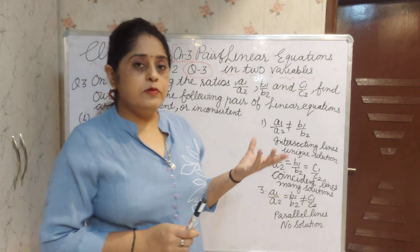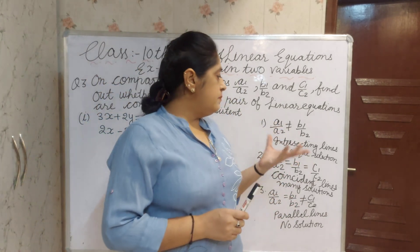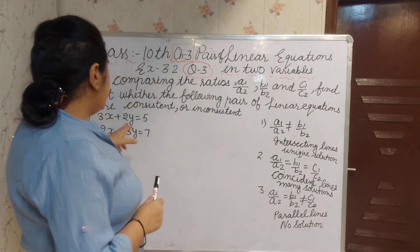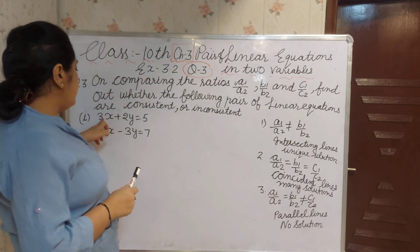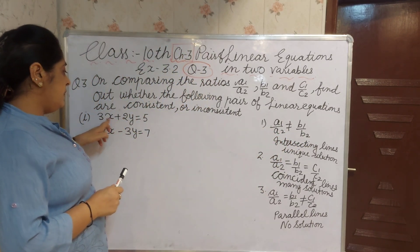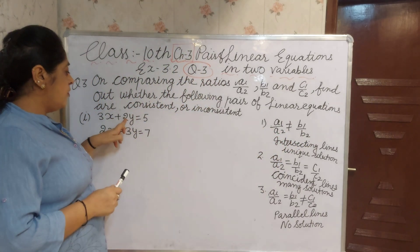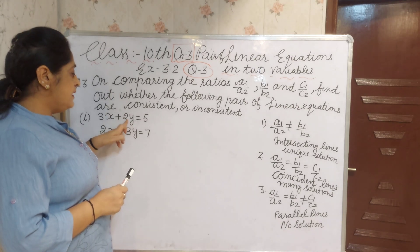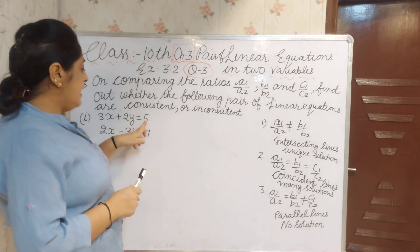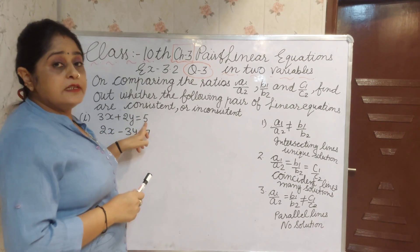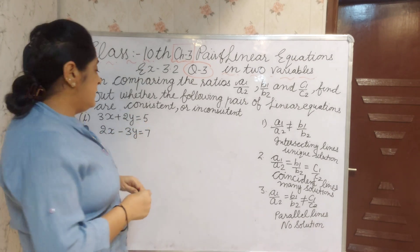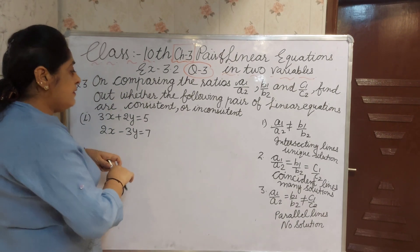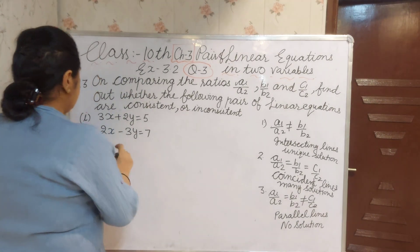What is A1, A2, B1, B2, and C1, C2? The coefficient of X is A1, the coefficient of Y is B1, and the constant term is C1. Now we compare A1 by A2.